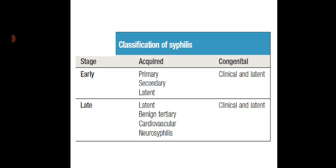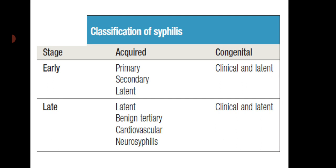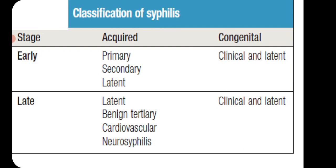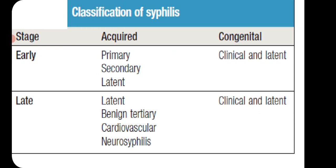Classification of syphilis: we can divide syphilis into acquired and congenital, with early and late stages. In acquired syphilis, the early stages consist of primary syphilis, secondary syphilis, and early latent syphilis. The late stage consists of late latent syphilis, benign tertiary syphilis, cardiovascular syphilis, and neurosyphilis. Congenital syphilis can be clinical or latent.